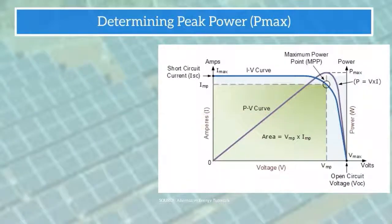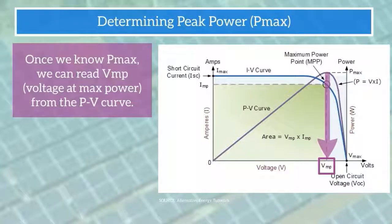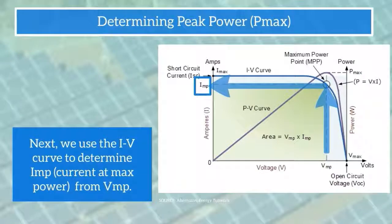Once we know Pmax, we can read VMP or the voltage at maximum power from the PV curve as well. Next, we use the IV curve to determine IMP or current at max power from VMP.